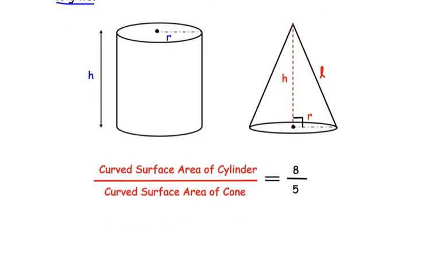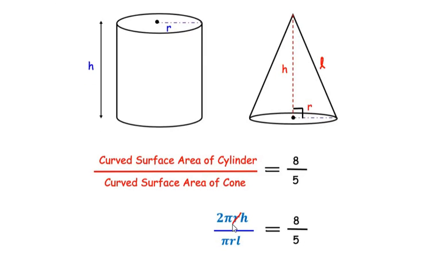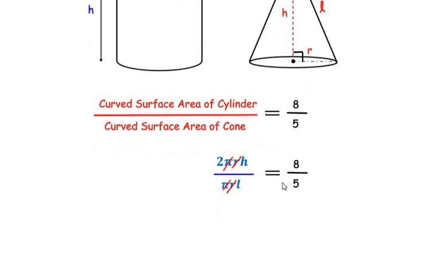Next, we write the formulas. The curved surface area of a cylinder is 2πrh, where r is the radius and h is the height. The curved surface area of a cone is πrl, where r is the radius and l is the slant height. Since the radius is the same for both, r cancels from numerator and denominator, and π also cancels, leaving us with 2h/l = 8/5.